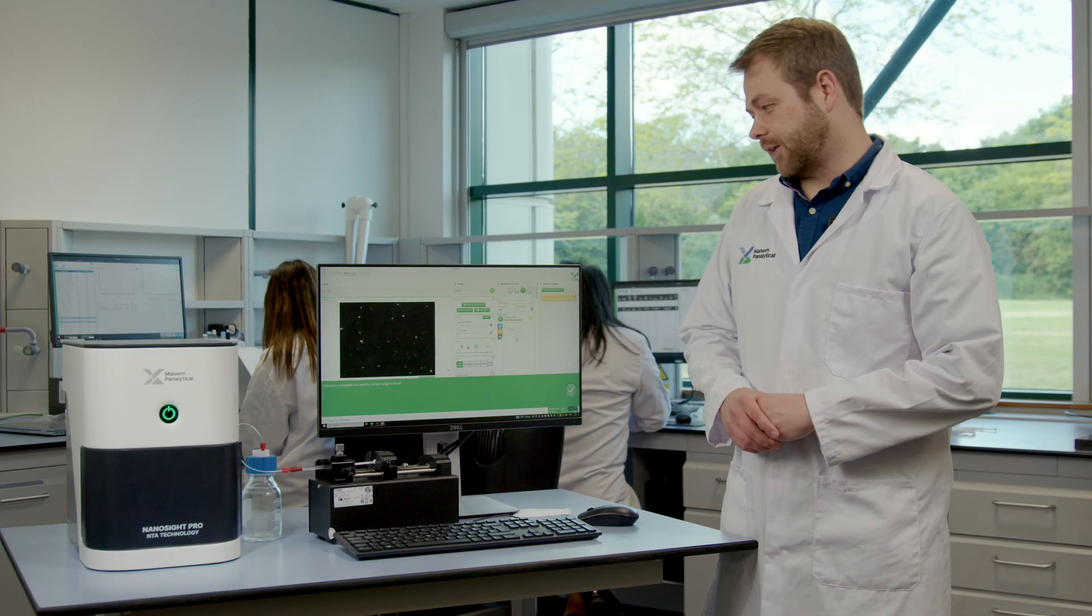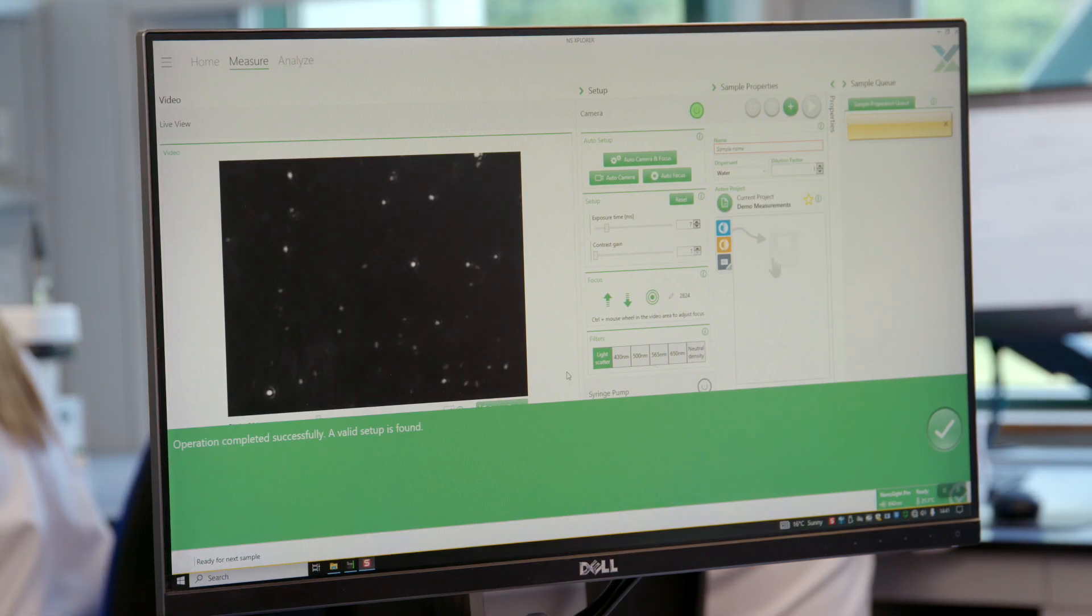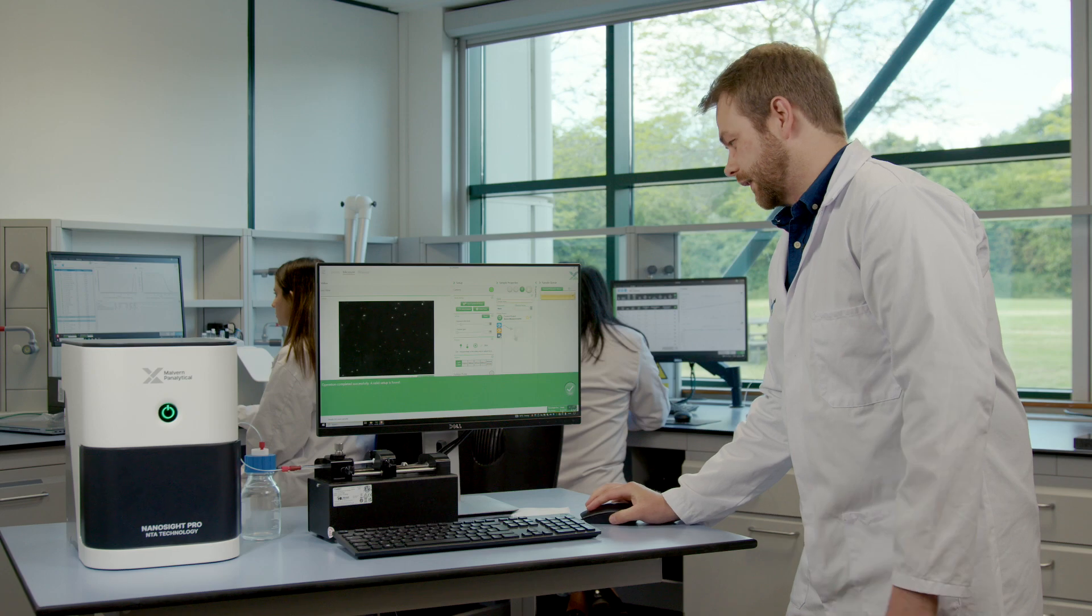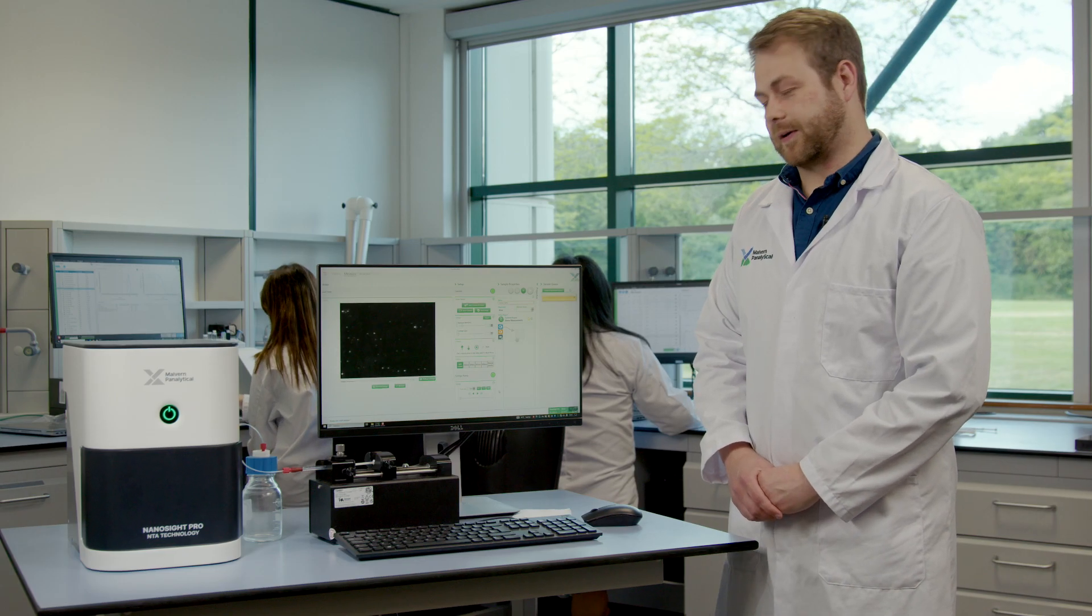The software has now found the optimum setting for the focus so now we can look at setting up the rest of the measurement. To find this easier, get the sample flowing. I'm going to start off the syringe pump at a high flow so we just turn it on here and then click the 200 and once that gets going we can then slow it down and make sure we get a slower steady flow to track the Brownian motion of the particles.